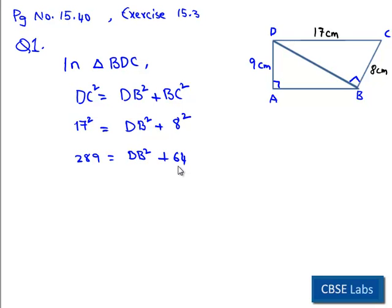On transposing 64 to right hand side, we get 289 minus 64 which is DB square. Therefore, DB square is equal to 225. On applying square roots on both sides, we get DB as 15. So we get the length of side DB as 15 centimeters.